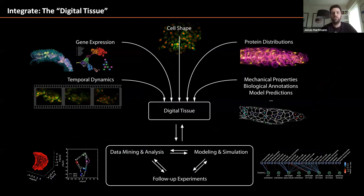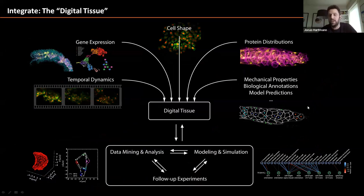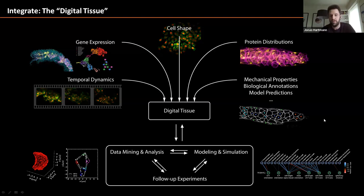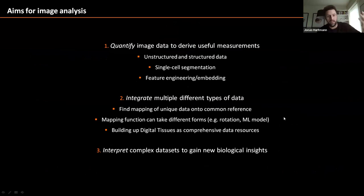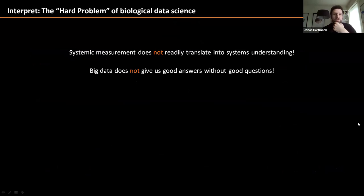In the long run, labs can build up a digital tissue — a digital twin of the systems they care about — where through various reference measurements you integrate information from cell shape, gene expression, temporal dynamics, and harder-to-measure properties like mechanical properties. These digital tissues serve as a basis for data mining, for constraining modeling, and can be enriched in a virtuous cycle through follow-up experiments.